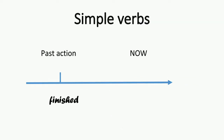Simple verbs are also used for past actions that are finished. For example, I ate dinner at 6 p.m. Now it is 8 p.m., so I already ate dinner. This action is finished — I don't need to eat anything anymore.